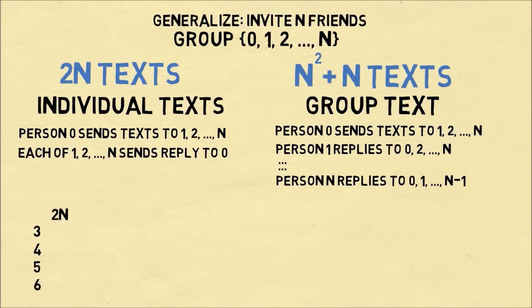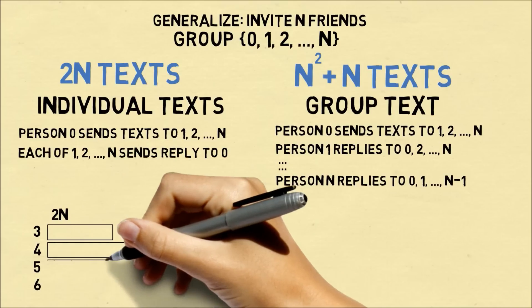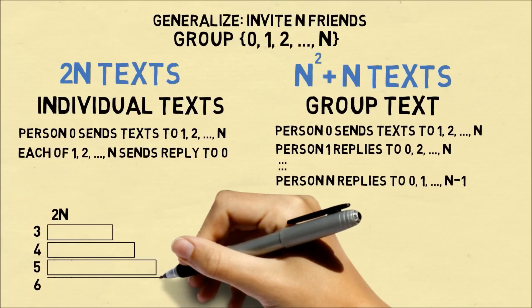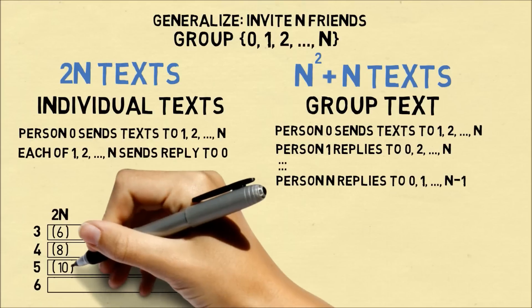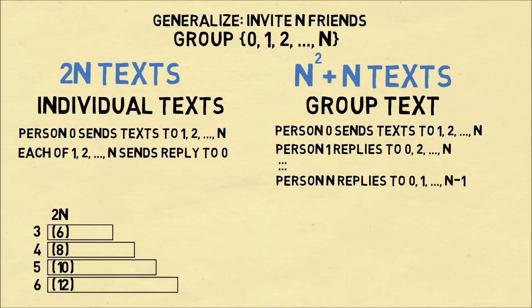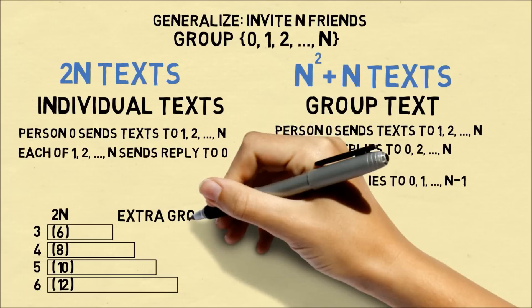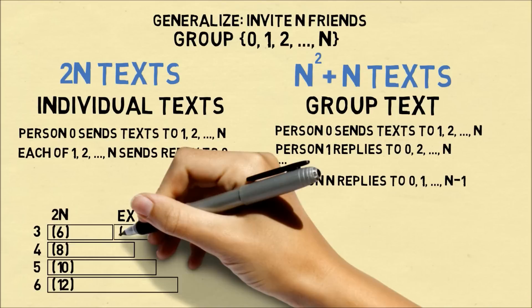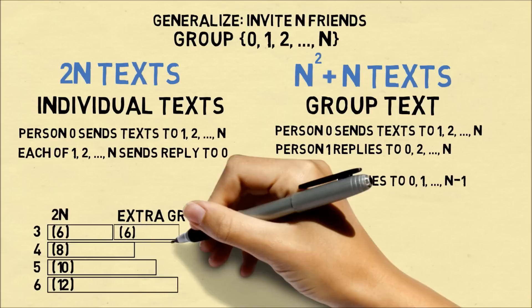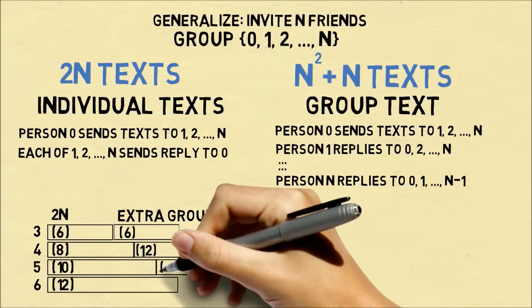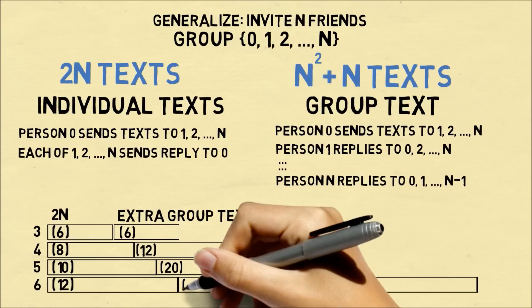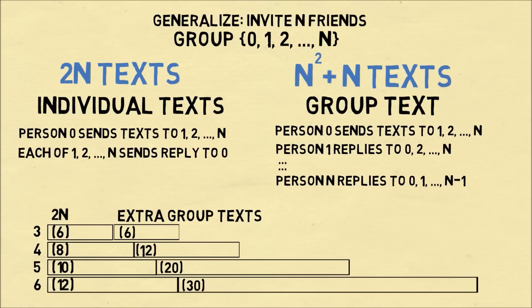We can graph out how many more messages are needed for the group text. If you send individual texts, you would need six, eight, ten, or twelve messages between three to six friends. The extra number of texts required for group texts are six extra for three friends, twelve for four, twenty for five, and a whopping thirty extra texts if you have a group of six.